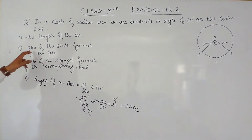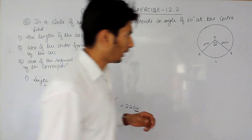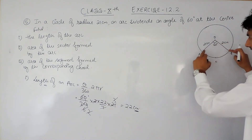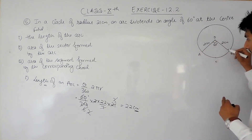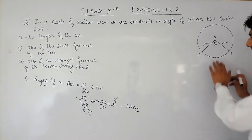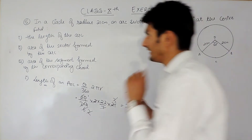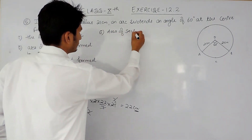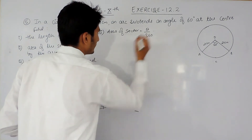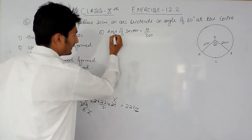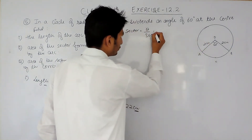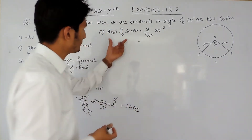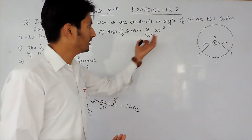Now let's solve the second part — finding the area of the sector formed by the arc. This arc, subtending an angle of 60 degrees at the center, forms a sector, and we have to find the area of this sector. To find the area of the sector we use the formula: area of sector = theta divided by 360, multiplied by the area of the circle, which is πr². So: area of sector = (theta/360) × πr².